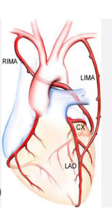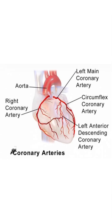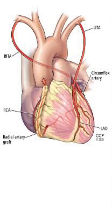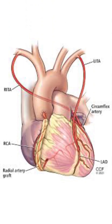The grafts bypass these blockages to restore circulation. Step-by-step CABG procedure — graft harvesting: arterial grafts, usually the internal mammary artery or radial artery from the arm, are chosen for long-term patency. Vein grafts, commonly the saphenous vein from the leg, are easier to harvest but more prone to future blockages.